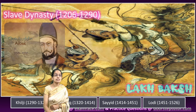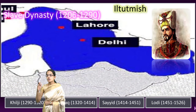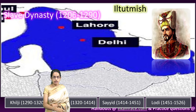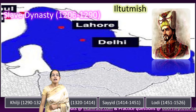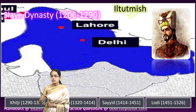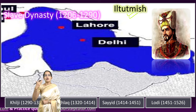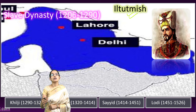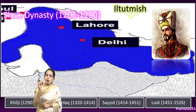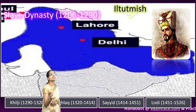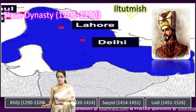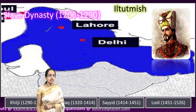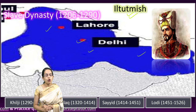Following his death, his son Aram Shah rose to power, but he was immediately overthrown by the slave of Qutb-ud-din Aibak — Iltutmish. Iltutmish had no hereditary claim; he rose to power on his own merit and became one of the most efficient rulers of the Slave dynasty. Therefore, he is known as the real founder of the Slave dynasty. He conquered most of North India, including regions of Mandu, Ujjain, Gwalior, and Malwa.